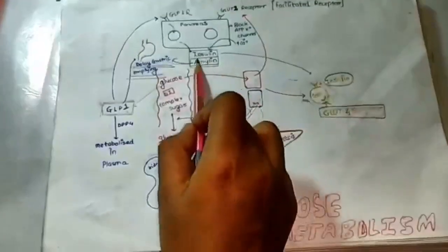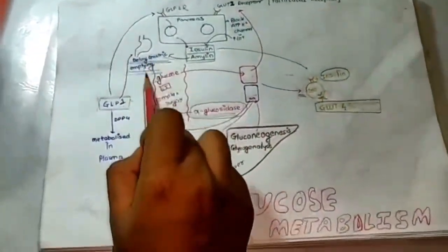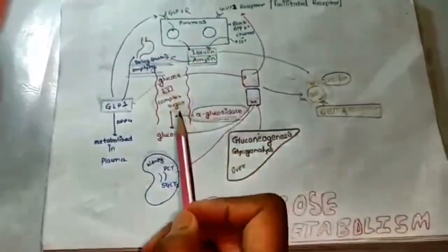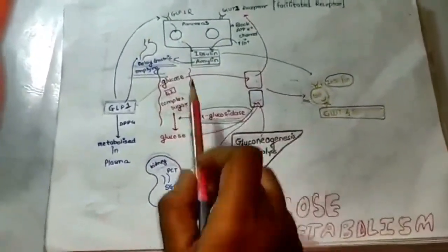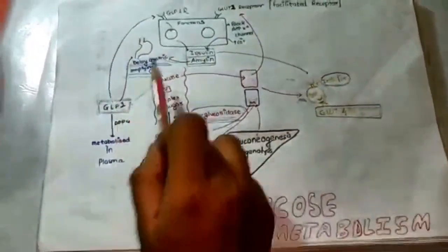One more thing is secreted, amylin. GLP-1 also helps in delaying the gastric emptying. And if gastric emptying is delayed, it will lead to decreased glucose absorption from the small intestine. This action is also shared by amylin which is also released by the action of GLP-1 on beta cell.